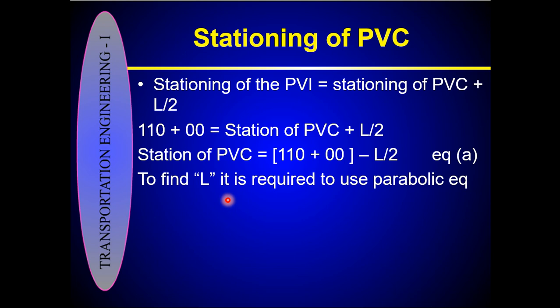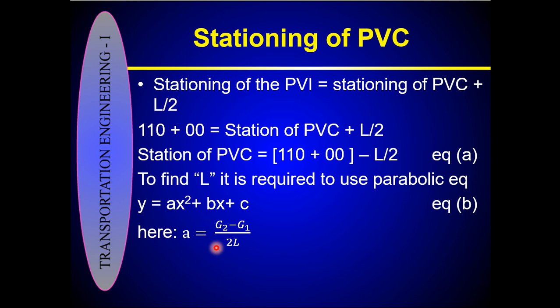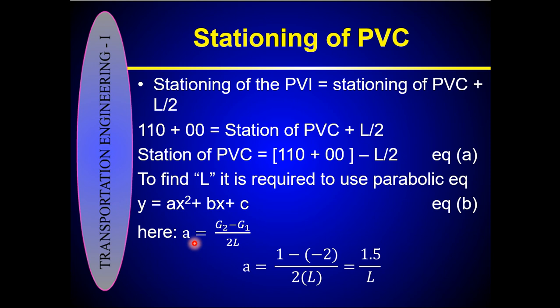The coefficient 'a' is half the difference between the roadway grades. G2 = 1 and G1 = minus 2, so the difference is 1 minus (minus 2) = 3. Therefore a = (G2 − G1) / (2L) = (1 − (−2)) / (2L) = 3/(2L), which gives a coefficient value of 1.5/L.